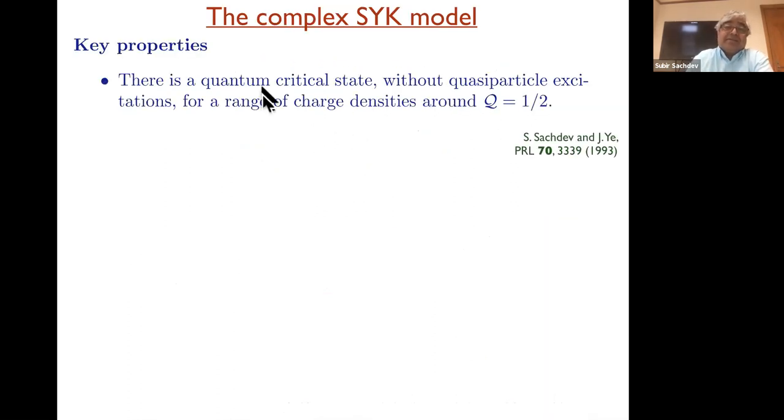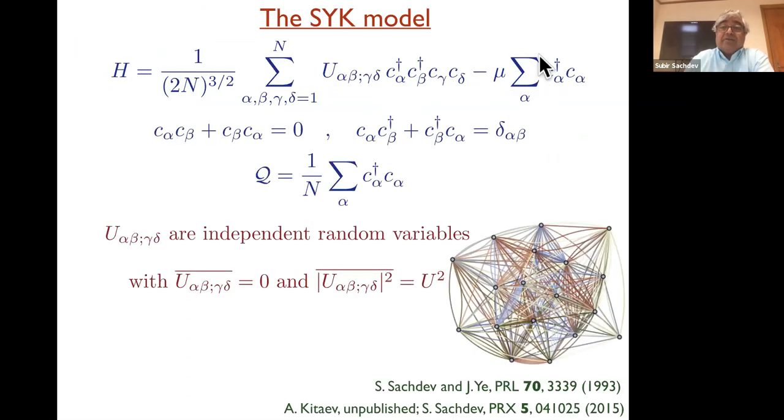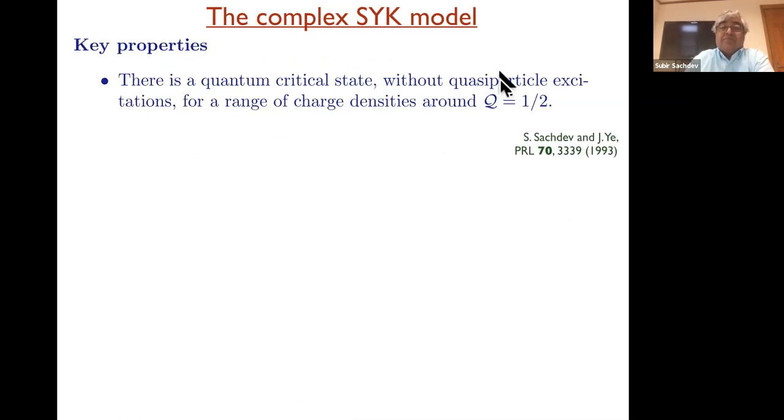The key properties are, first of all, in some fundamental sense, this model realizes a quantum critical state, which I'll describe more precisely. And furthermore, there are no quasi-particle excitations. That means you can't think of the low-lying states as just sums or differences of various quasi-particles. And this quantum critical state is present for a range of densities around Q equals a half. So as you vary mu, provided you're not too far from half-filling, you're pretty much in the same state. So it's really like a phase of variable density.